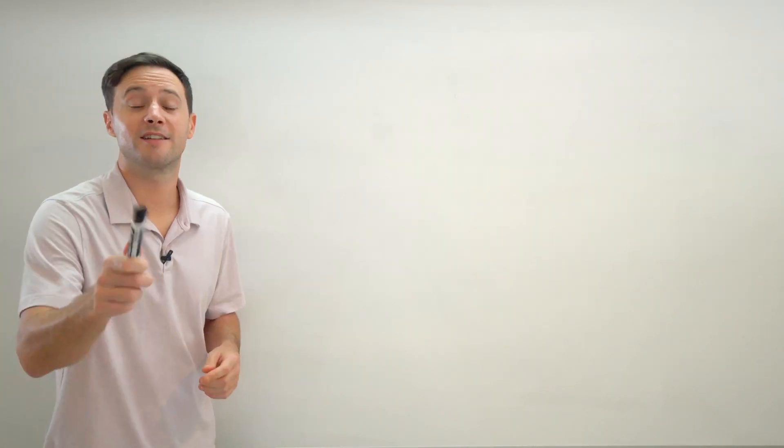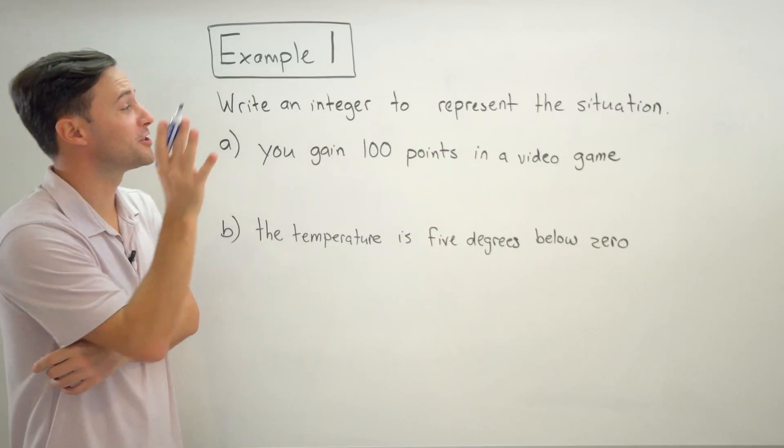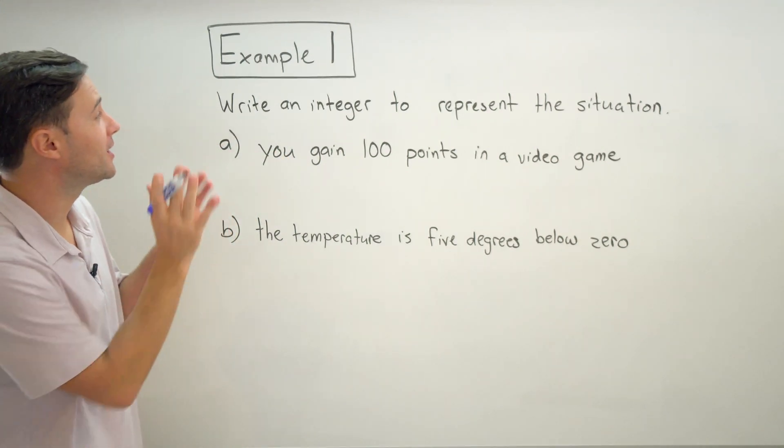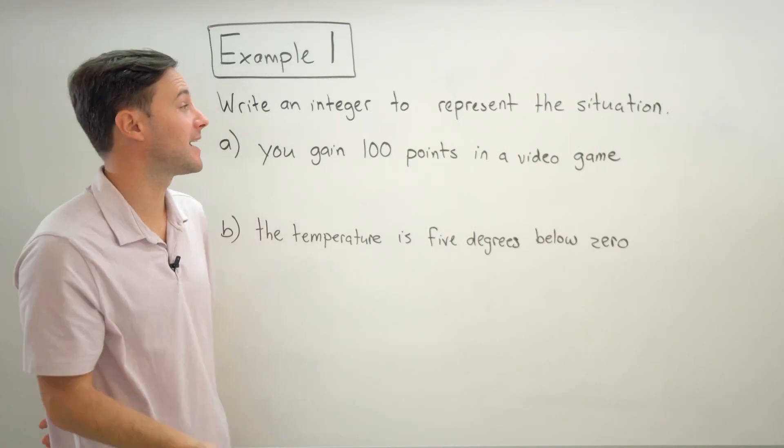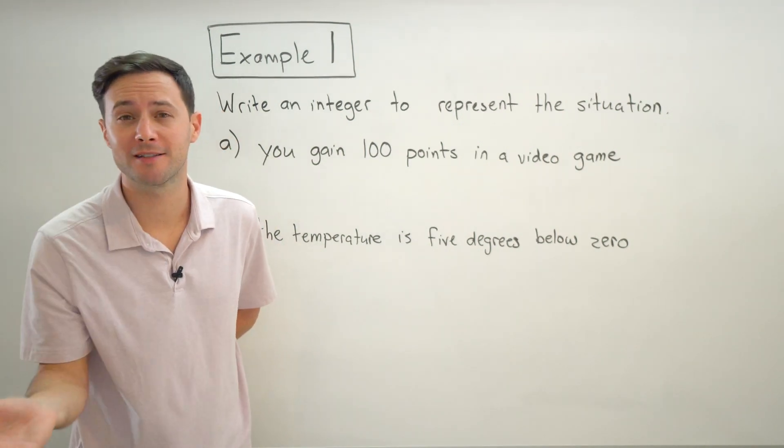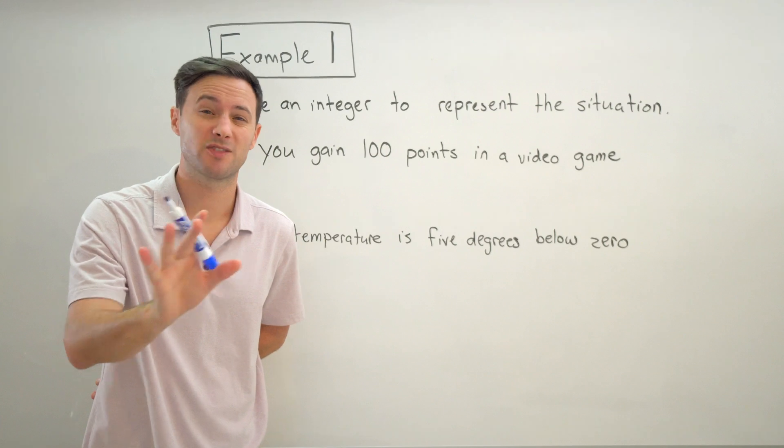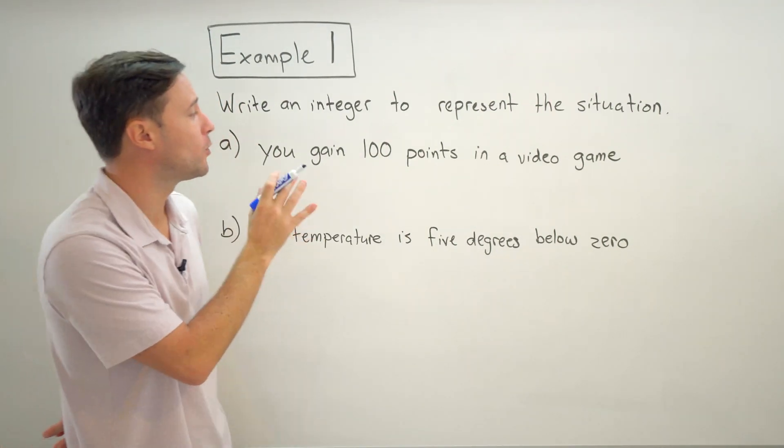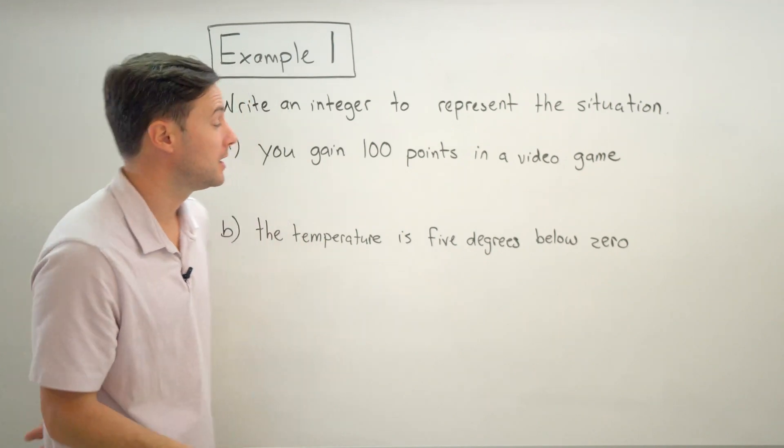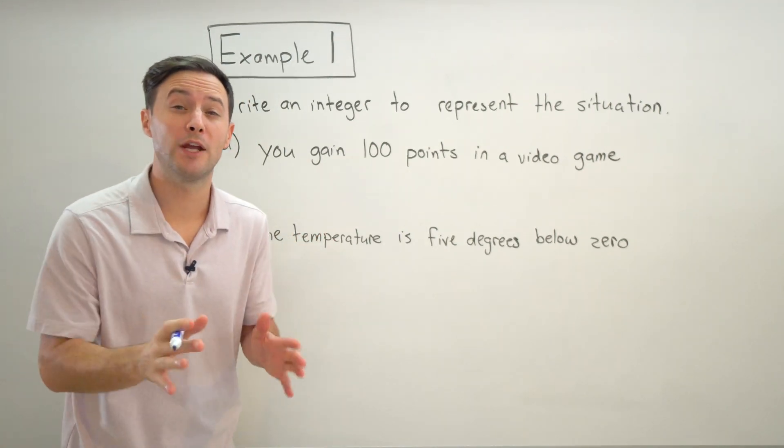All right, let's get to our first example. Write an integer to represent the situation. For example one, all we're really looking for is a keyword that is going to tell us is this integer going to be positive or is it going to be negative. That's really all we're looking for.